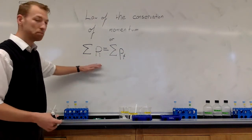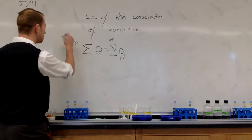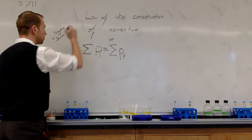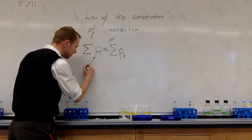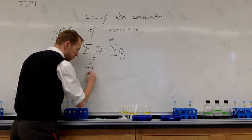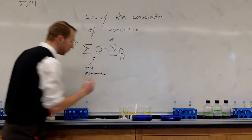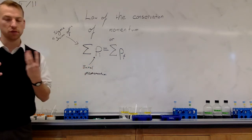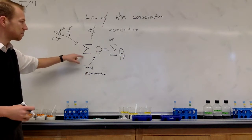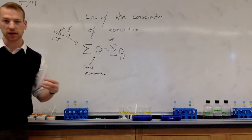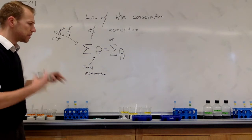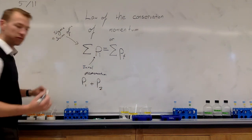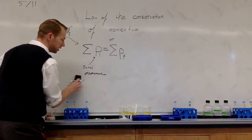We can represent the law of conservation of momentum with this fairly simple-looking equation. This symbol is called sigma, and it's used in mathematics to mean the sum of, or if you add all the parts together, this is what you get. This is our initial momentum — the sum of all of the parts beforehand. So if we have a hundred objects all moving in different directions, and we add all of those momenta together, that one vector is our initial momentum. It will look like the momentum of object one plus the momentum of object two before the collision. That's what this little 'i' means.